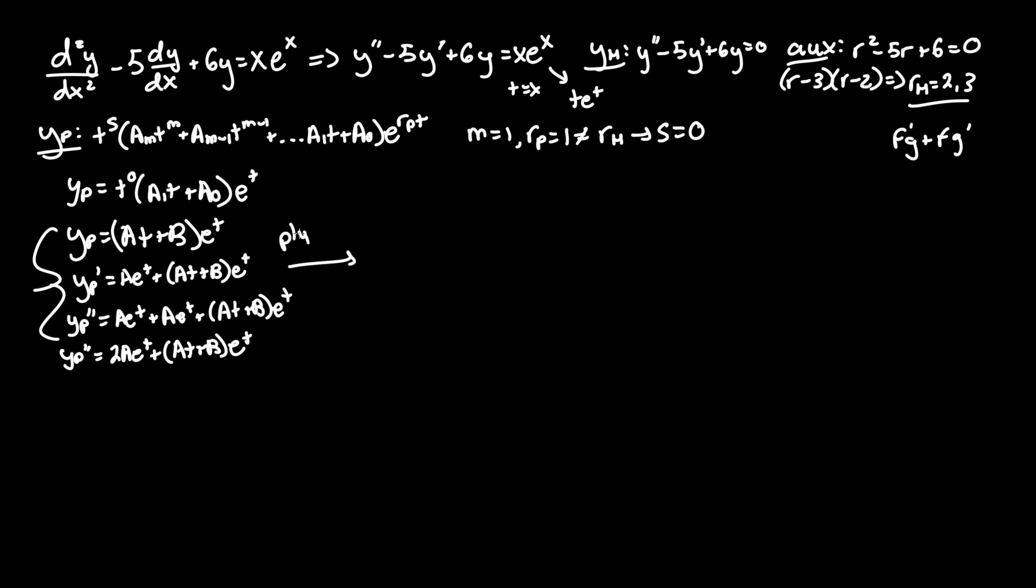Now we got to plug all of this in to our equation y double prime minus 5y prime plus 6y equals t e to the t. So y double prime is yp double prime, 2a e t plus at plus b e to the t minus 5y single prime, a e to the t plus this whole term, plus 6y, which was our original term, at plus b e to the t. Equals t e to the t.